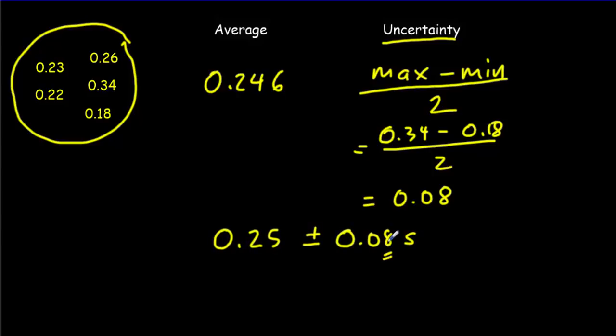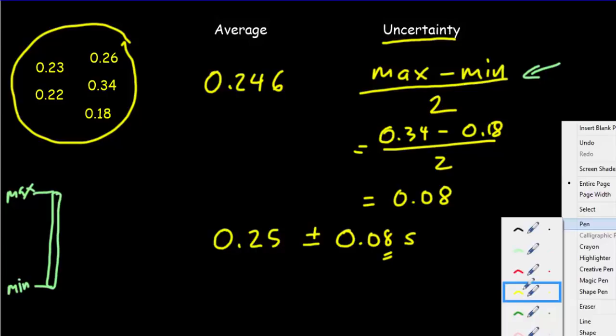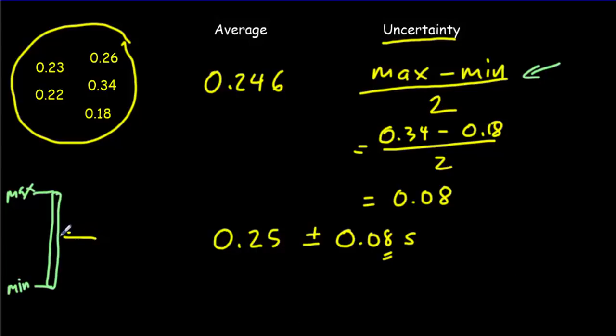So we'd write that the time is 0.25 plus or minus 0.08 seconds. Notice here, one significant digit in the uncertainty. That digit is in the second decimal place. So I want to round my value here to the second decimal place. And take note here. This formula here works because you've got a maximum value and a minimum value and then a range between them. And so typically, your average value falls right in the center. So then if we add on this amount, the range over 2, we'll get up to the maximum value. If we subtract off this amount here, once again, the range over 2, we'll get down to the minimum value. So our uncertainty is just equal to that range, max minus min, divided by 2.